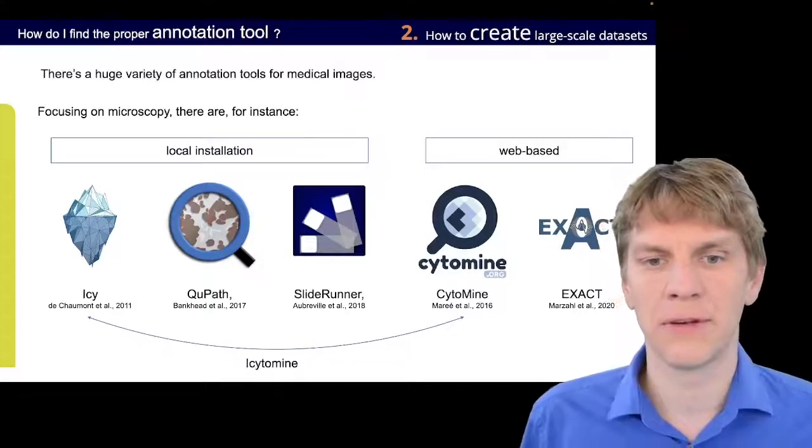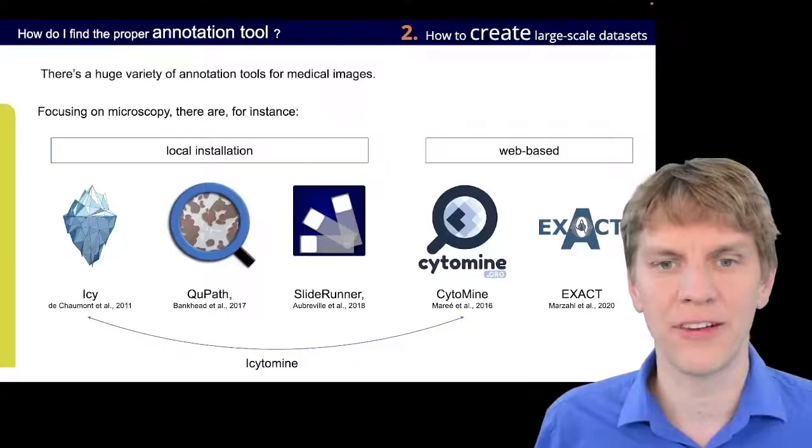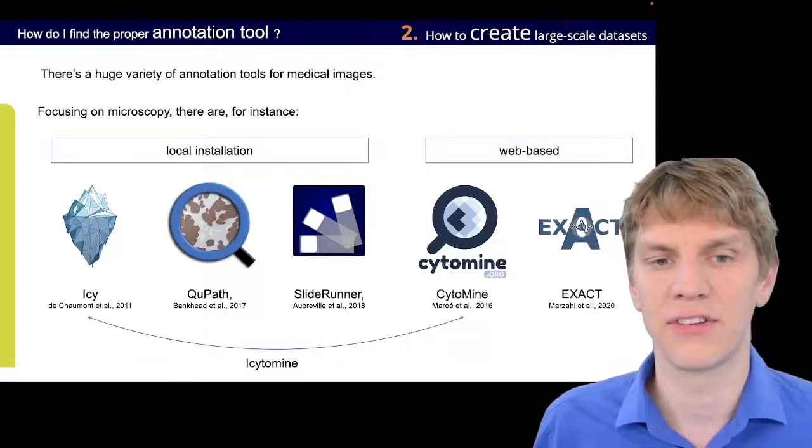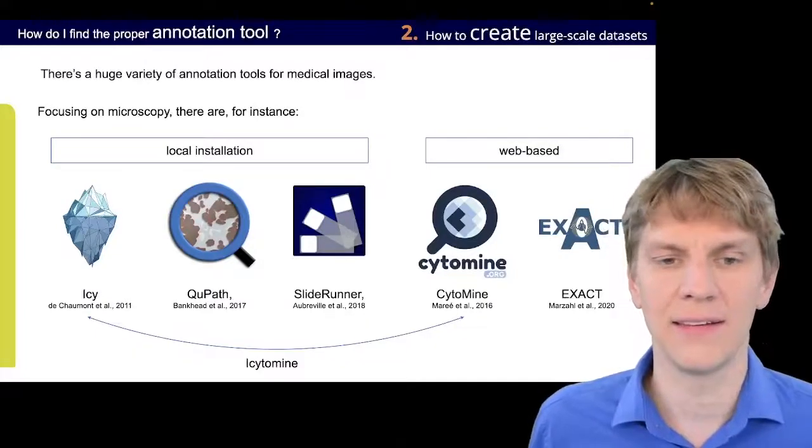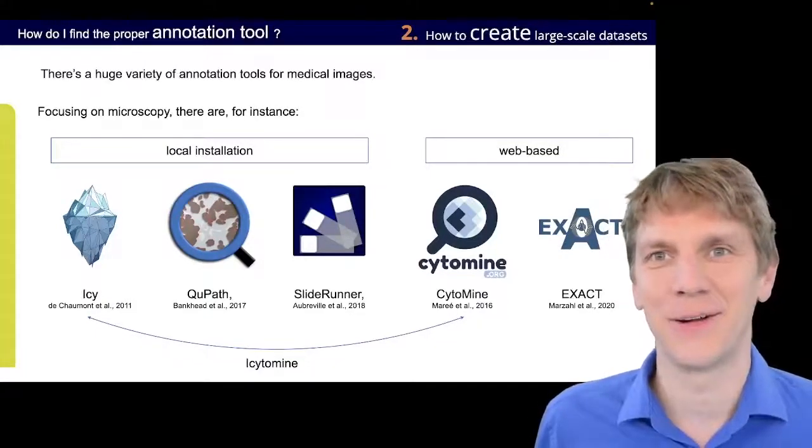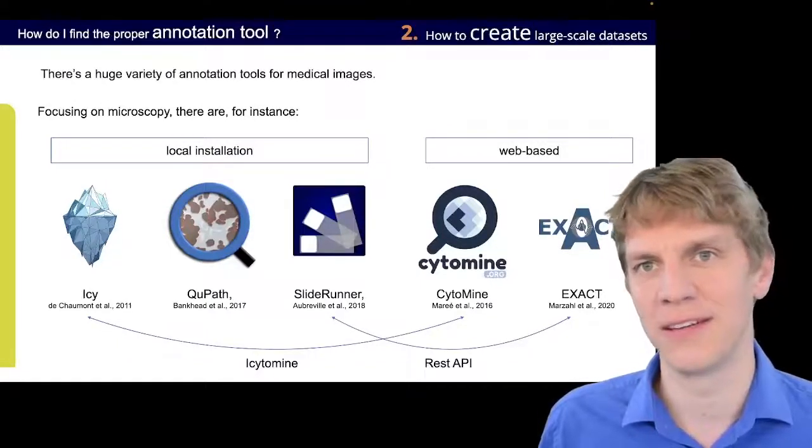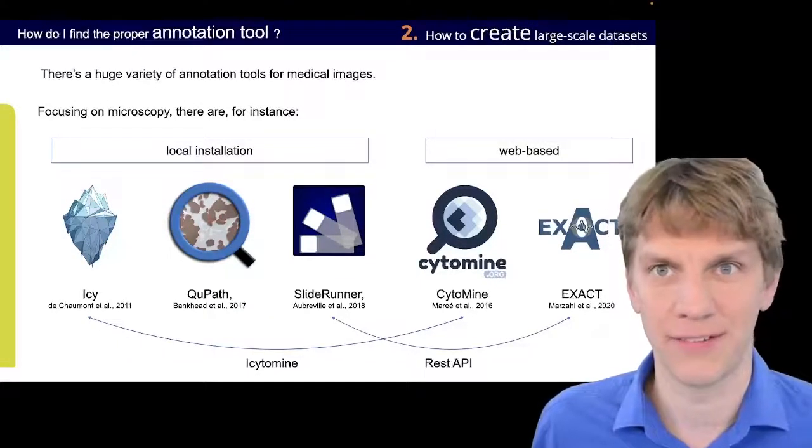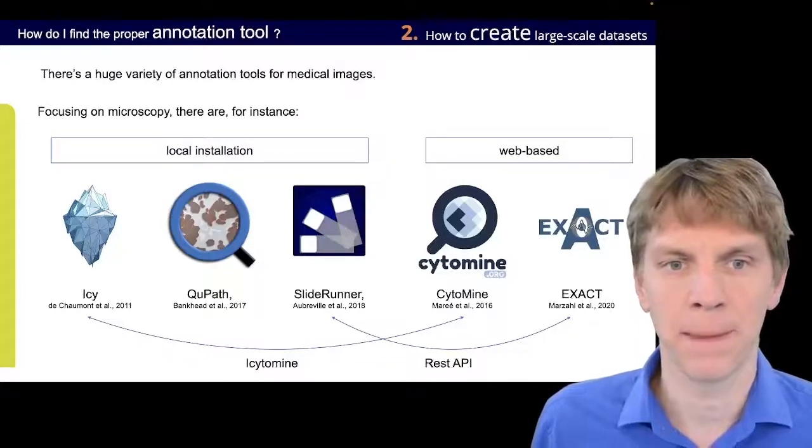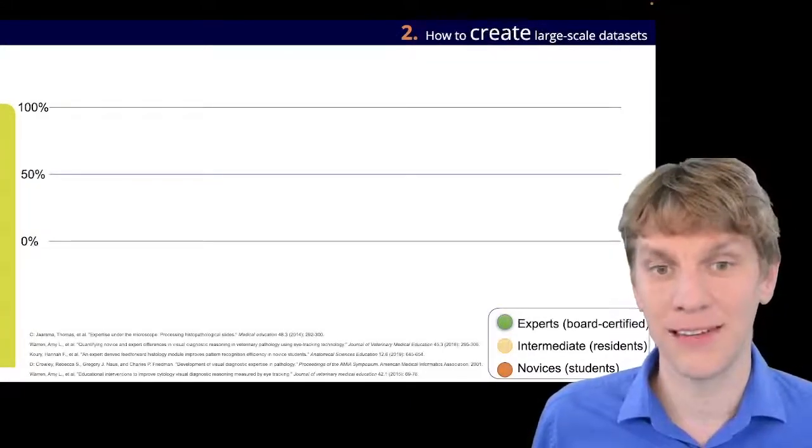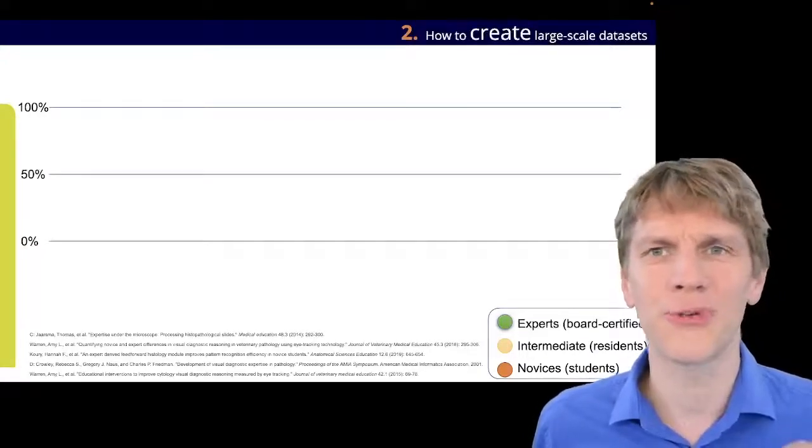Well, depends on the task that you're doing and the annotation workflow that you have, which one of the tools will really be the best one. Also, notably nowadays, we also have synchronization between local and web-based installations, such as like for Cytomine and QuPath, there's iCytomine. And also for the synchronization between SlideRunner and EXACT, this is built in over a REST API interface that was designed for this. Okay, so now that we have answered this question, let's come to the next question, which is maybe a more tricky one.